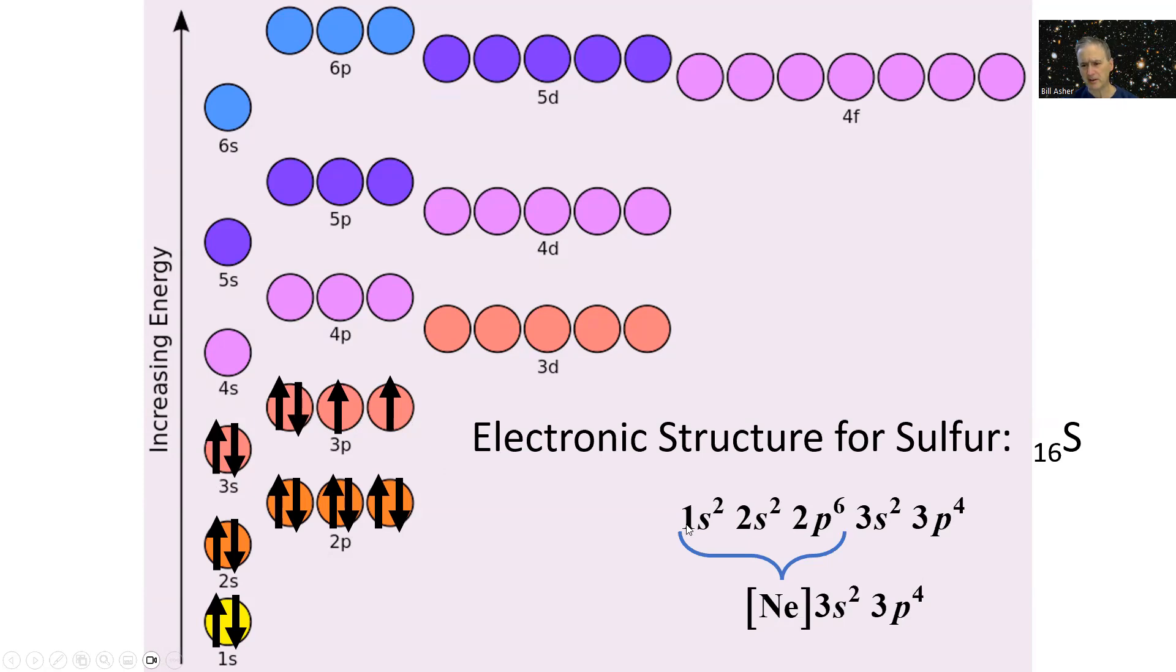We write this as 1s² 2s² 2p⁶ 3s² 3p⁴. These electrons, 1s² 2s² 2p⁶, if you go back...